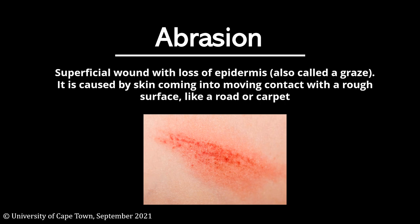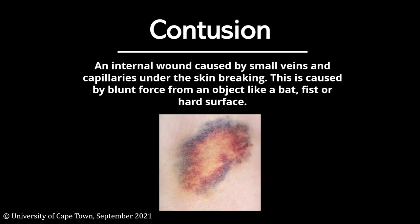An abrasion, colloquially referred to as a graze, is defined as a superficial wound with a loss of epidermis. It is caused by skin coming into contact with a moving rough surface, such as a road or carpet. A contusion, colloquially referred to as a bruise, is an internal wound caused by small veins and capillaries under the skin that break.